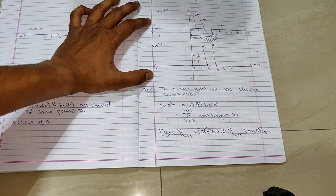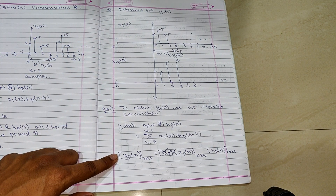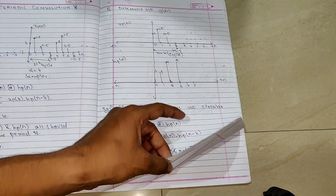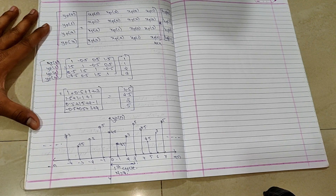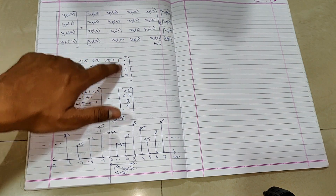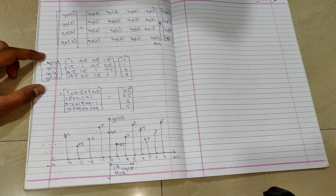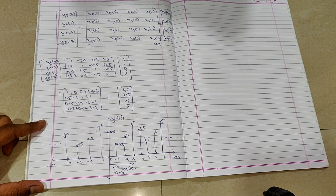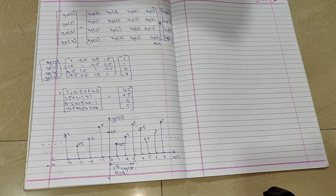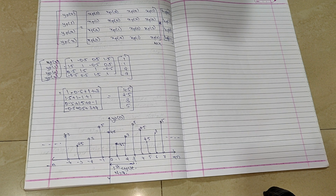So this is how you solve periodic convolution problems. What we did: check that the samples are the same for both the input and the impulse, then use the defined formula for circular convolution, write it in circular matrix format with diagonal shifts, multiply row by column to get the final matrix output, and plot the output to confirm the signal repeats after N cycles in periodic format. I hope you understood this video. If you have any doubts, ask in the comment section below. Like, share, and subscribe. Thank you.